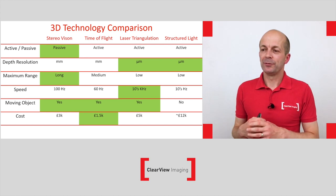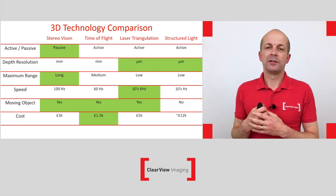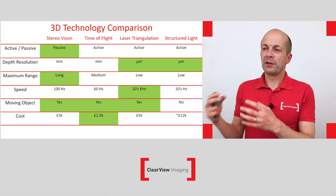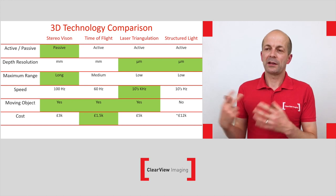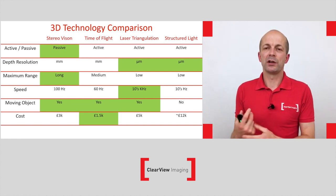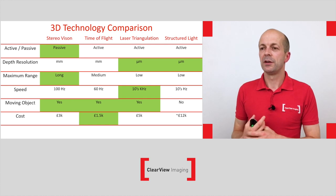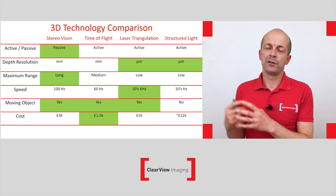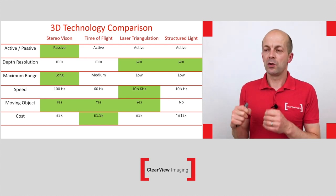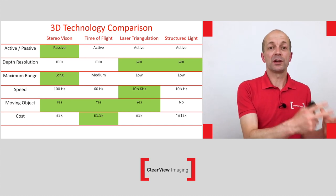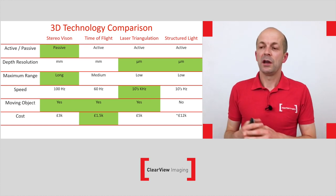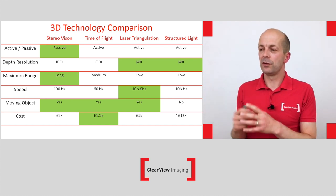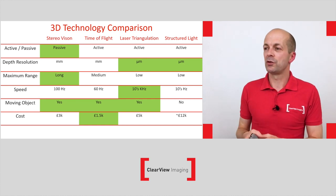In terms of an overall comparison, you can see in green where the clear winners are highlighted. The active or passive distinction only really comes into play if you have something highly reflective or highly absorbing. Depth resolution is something that typically drives which technology you're going to use, along with the distance range, speed, whether the object is moving or not, and ultimately how cost-sensitive your application is. Hopefully that gives you a good overview of the key benefits of each technology.